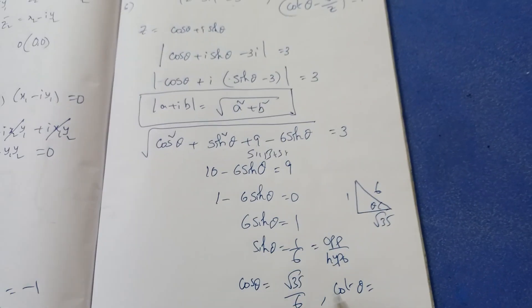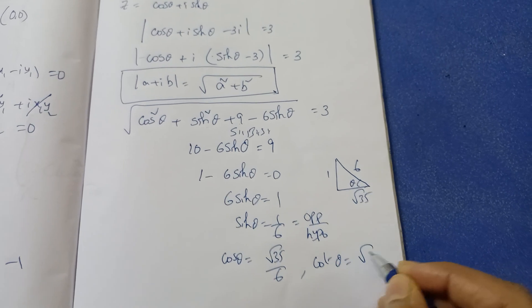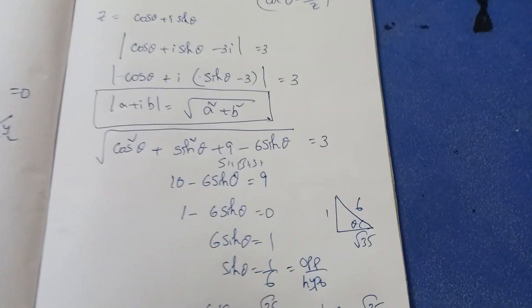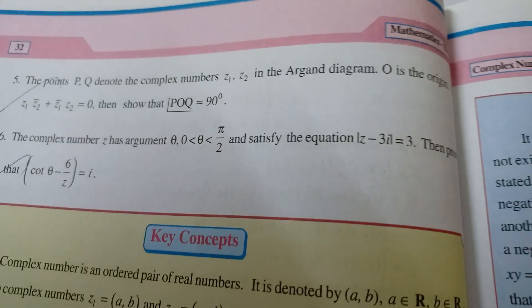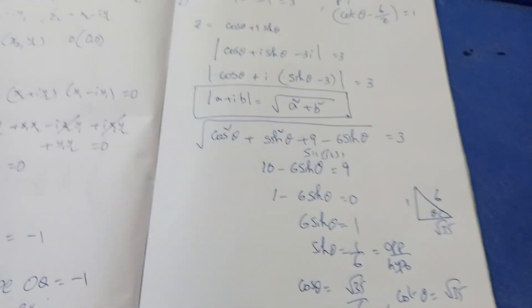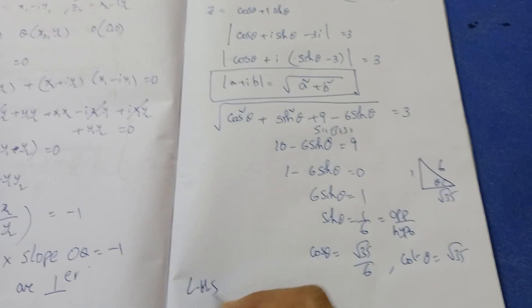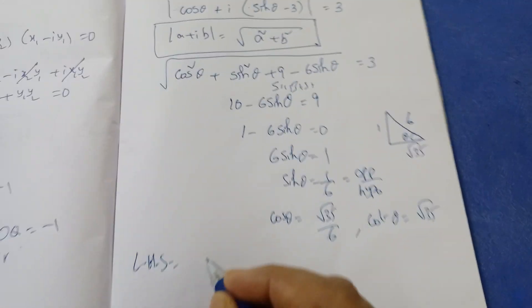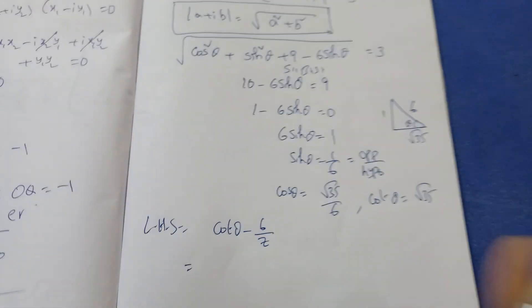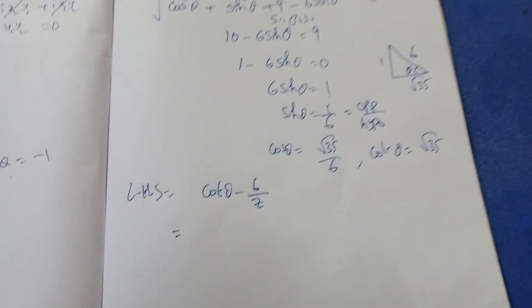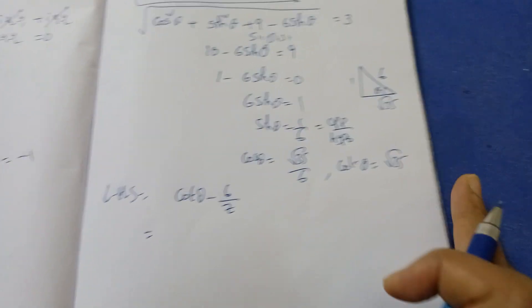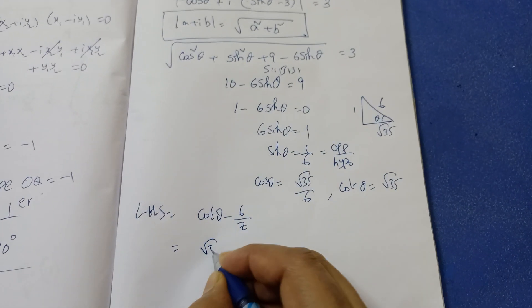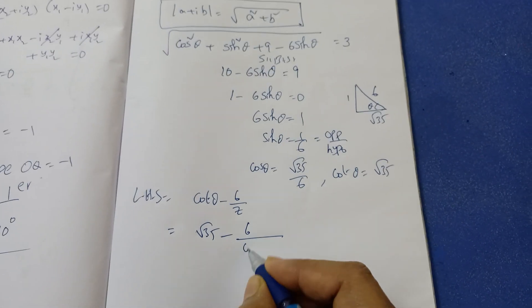cotθ = cosθ/sinθ = (√35/6)/(1/6) = √35. Since θ is in the first quadrant, all values are positive. Now computing the LHS: cotθ − 6/z = √35 − 6/(cosθ + i·sinθ). To simplify 6/(cosθ + i·sinθ), multiply by the conjugate.